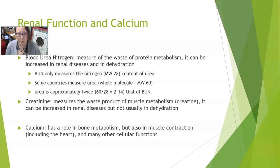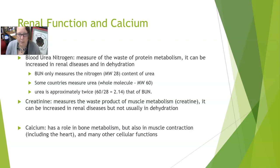Blood urea nitrogen (BUN) and creatinine assess renal function. BUN measures the waste product of protein metabolism — urea — which is typically increased in renal disease, dehydration, or a very high protein diet. BUN only measures the nitrogen content of urea, whose molecular weight is 28, whereas some countries measure whole urea, with a molecular weight of 60. Therefore, urea is approximately twice the BUN level (60 ÷ 28 ≈ 2.14). For example, a BUN of 10 mg/dL corresponds to a urea of approximately 21.4 mg/dL.